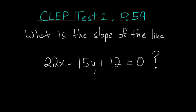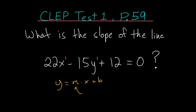What is the slope of the line 22x minus 15y plus 12 equals 0? You can tell this equation is linear because x and y are both raised to the first power. One of the easiest ways to find slope is to solve for y, since we typically write y equals m times x plus b, where m is our slope. Once we solve for y, the coefficient on x will be the slope.